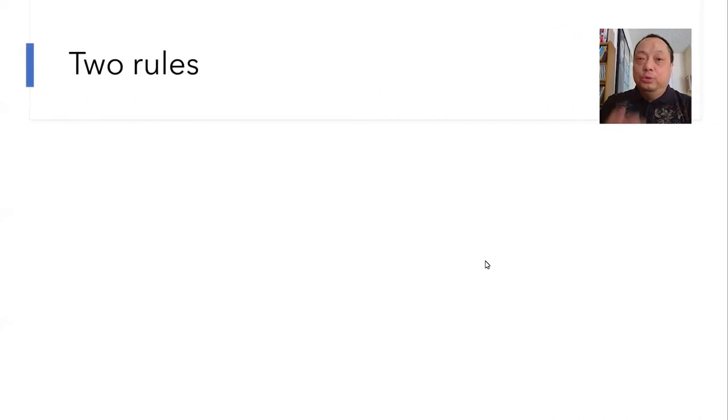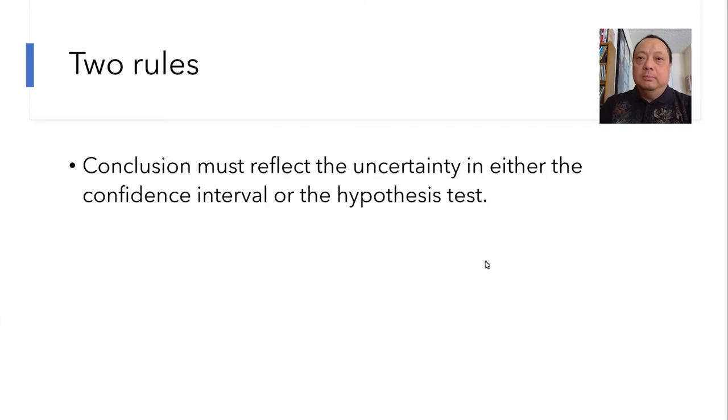Therefore here are the two rules of writing the conclusion. Number one, the conclusion must reflect the uncertainty in either the confidence interval or the hypothesis test. Number two, the conclusion must be verbal and in context.